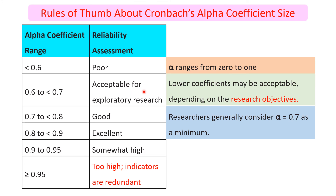If it is between 0.6 and 0.7, it is acceptable for exploratory research. The range of alpha coefficient is between 0 and 1, inclusive.